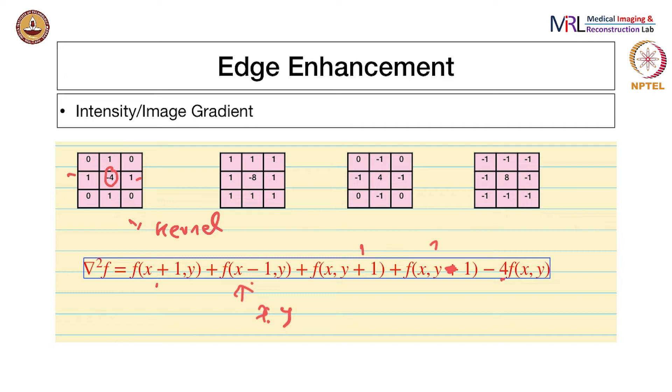There are various versions of this which I've indicated here. Some of them have the signs flipped, some have slightly higher values. They have diagonal terms also. For instance, this doesn't have diagonal terms, this has diagonal terms. Here the sign is flipped, and this one has diagonal terms with flipped signs. There are different variations possible.